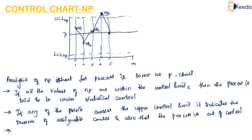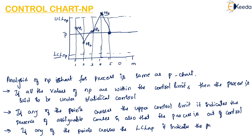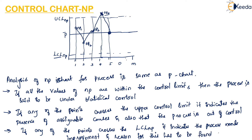If any points cross the lower control limit of the NP chart and go below it, then we can say the process requires improvement. We have to find the reason why the point went below the LCL, and the process must be improved accordingly.